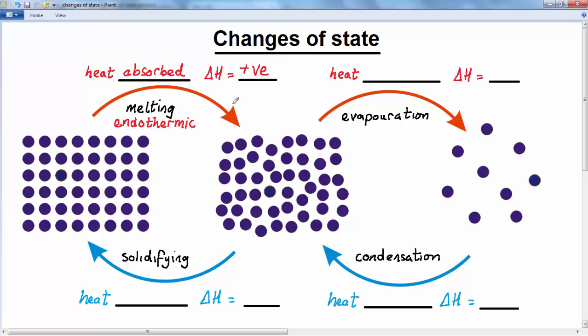So again, the same thing is happening with evaporation. Heat is being absorbed. Heat needs to be absorbed for evaporation to take place, which means that the change in enthalpy is positive. Again, evaporation is an endothermic process. That's to say heat is absorbed from the surroundings.